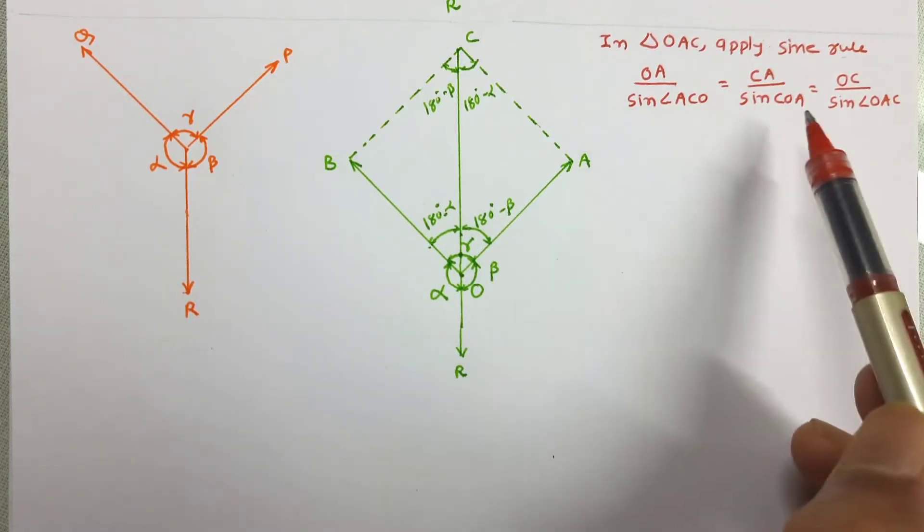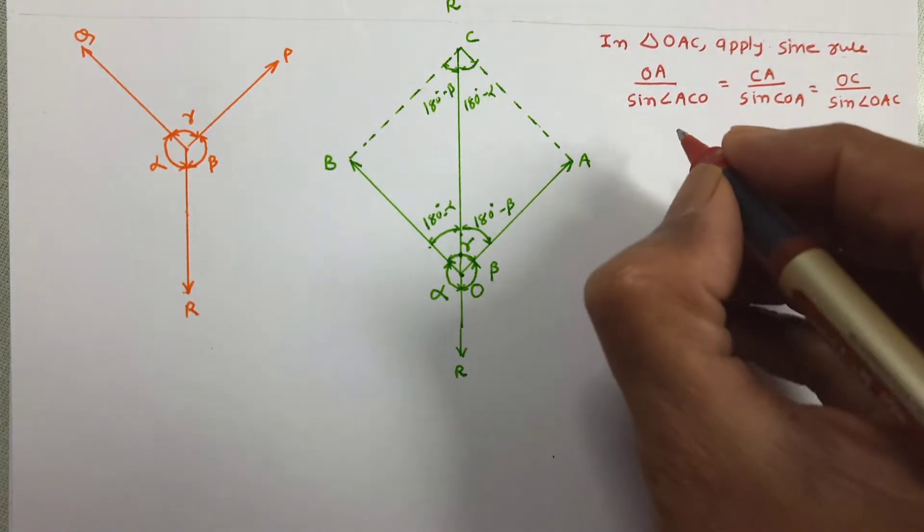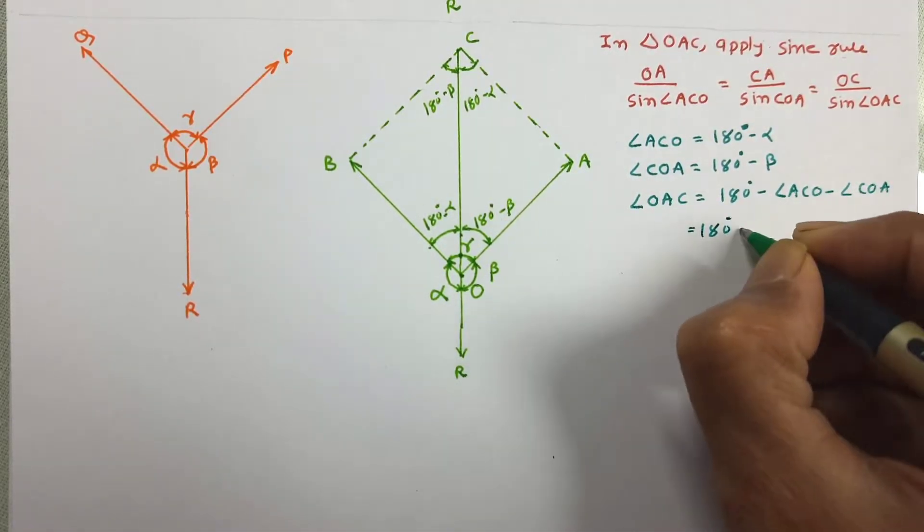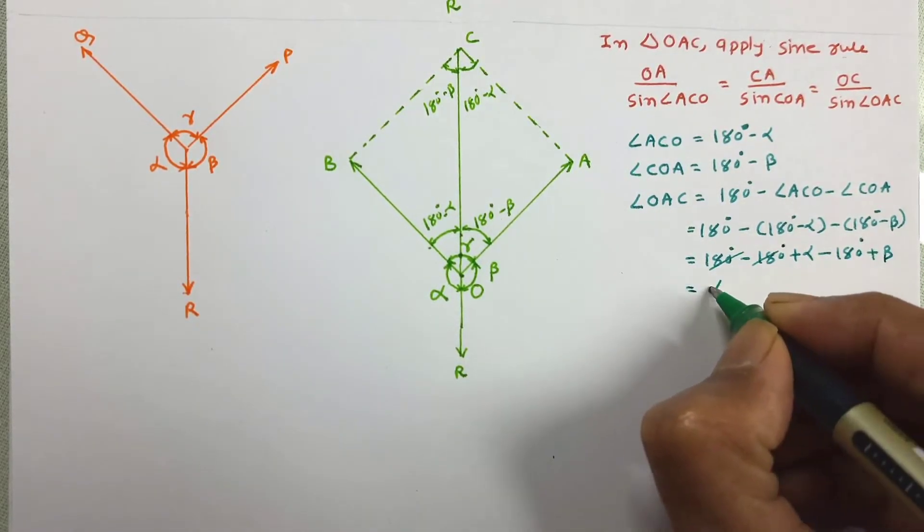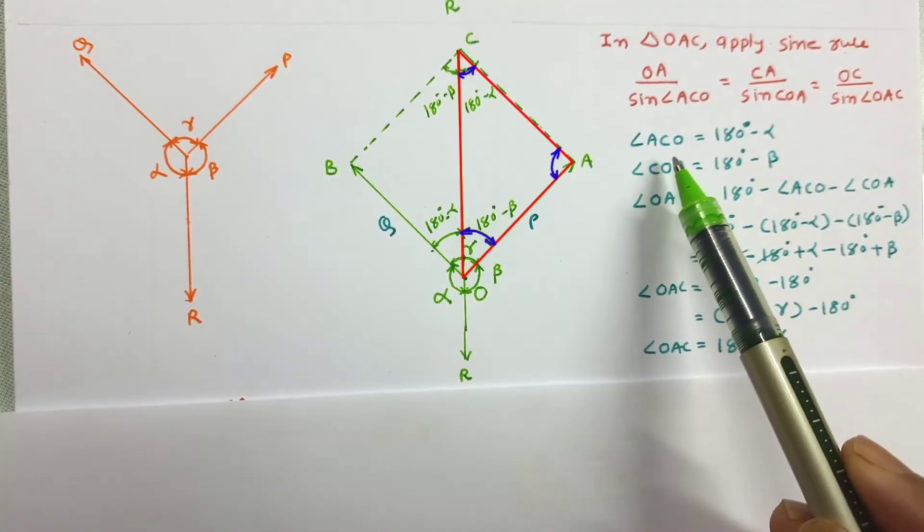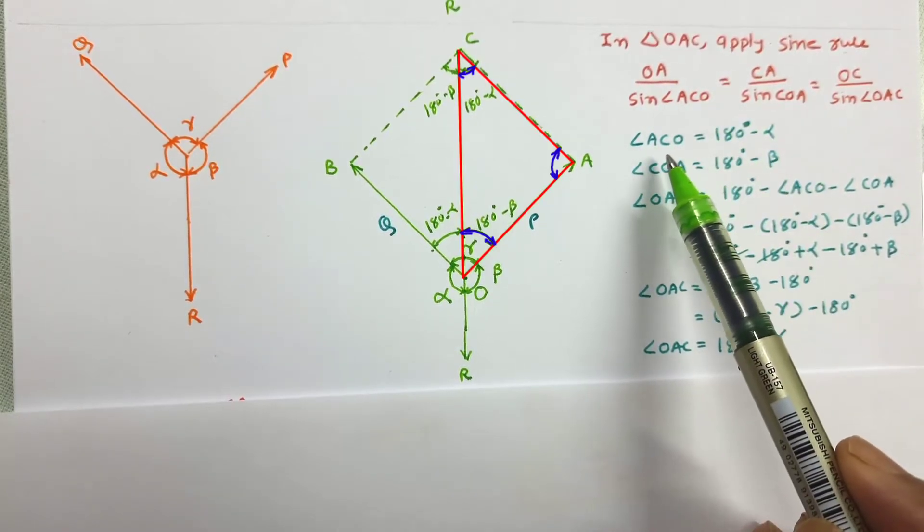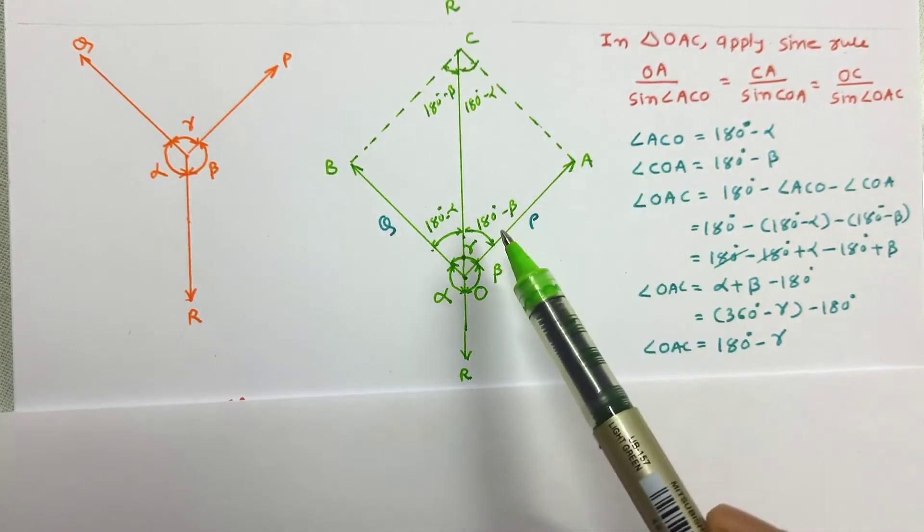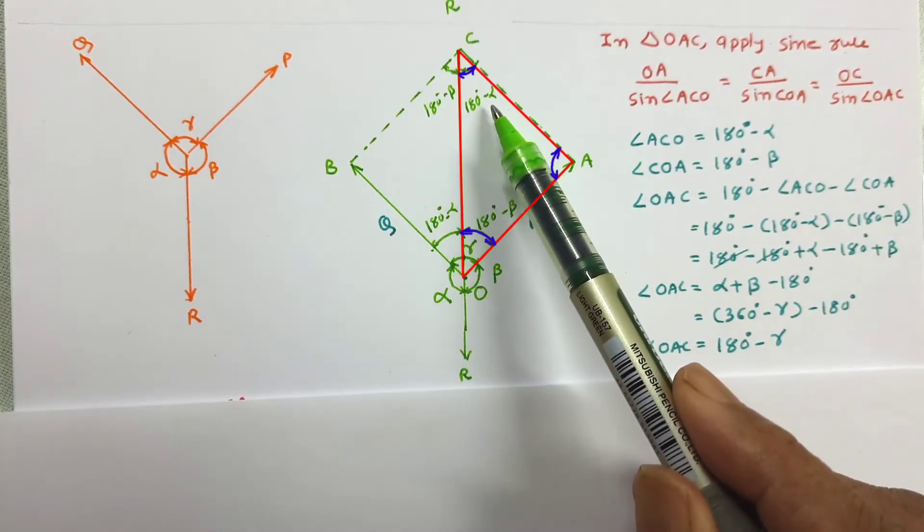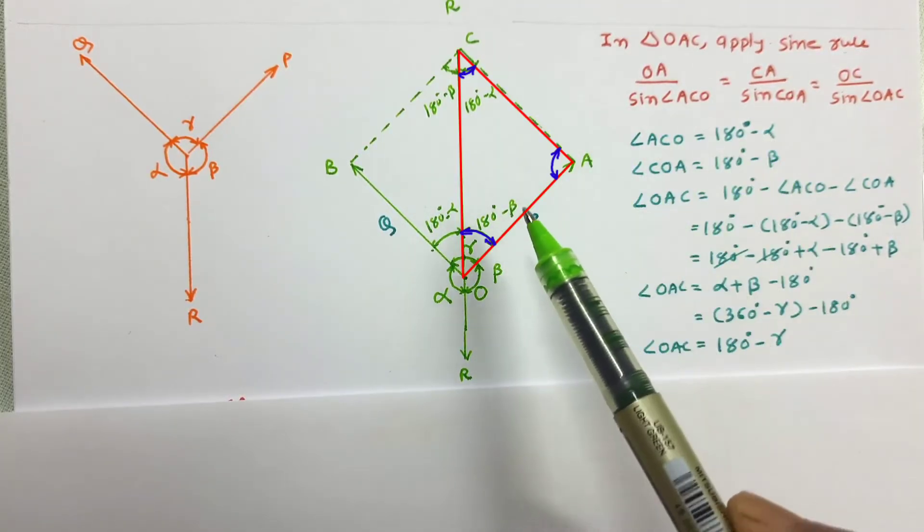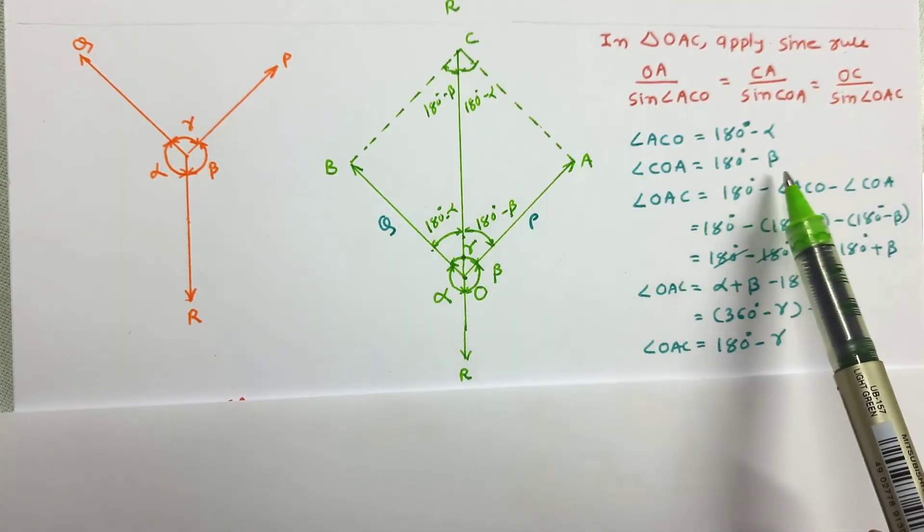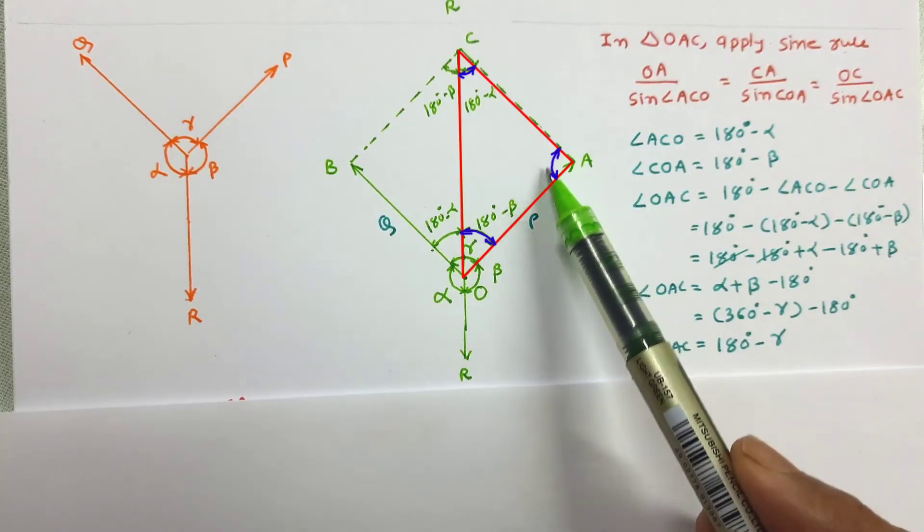So from geometry, all three angles have been worked out. Here angle ACO that can be written as 180 minus alpha. Angle COA can be written as 180 minus beta.